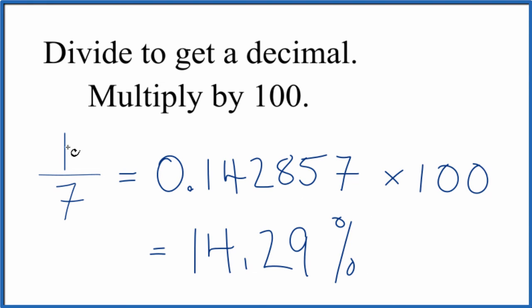So we take the fraction one seventh and we convert this to a percentage. We end up with 14.29 percent. That means that one is 14.29 percent of seven.